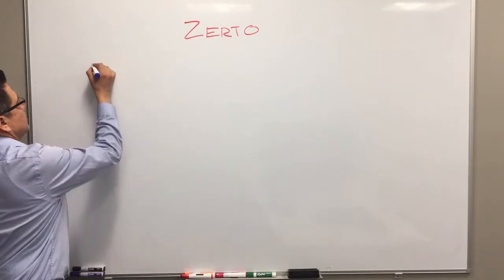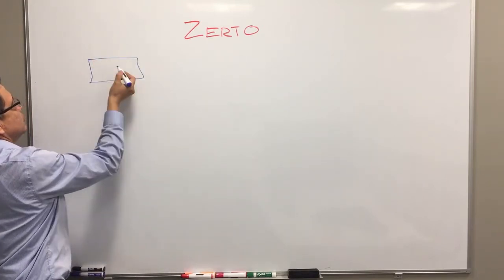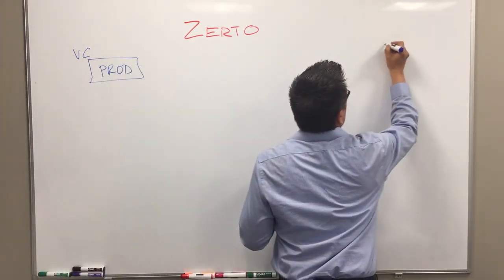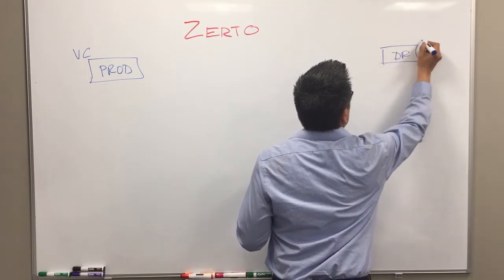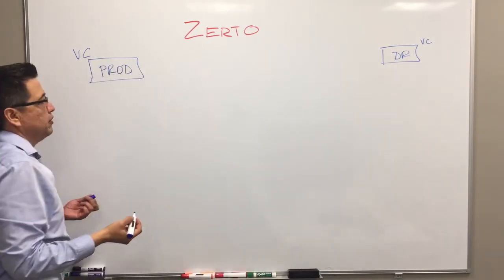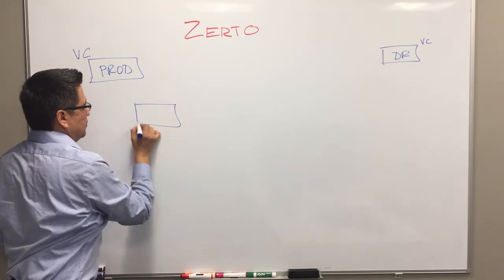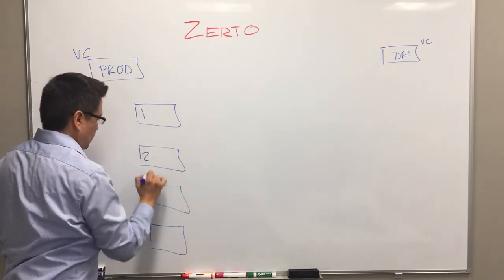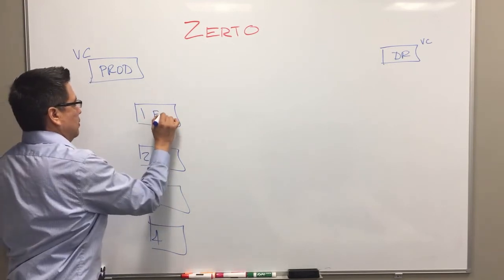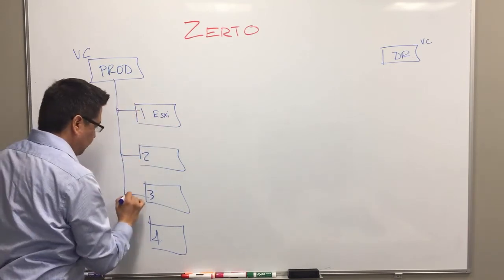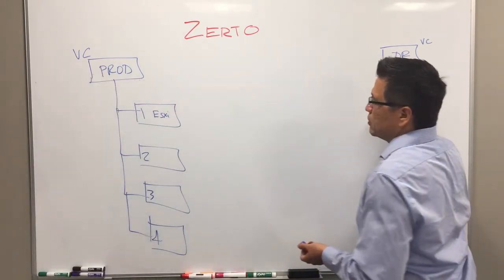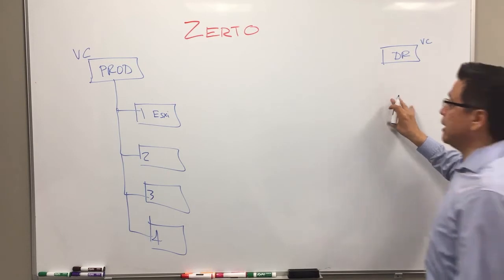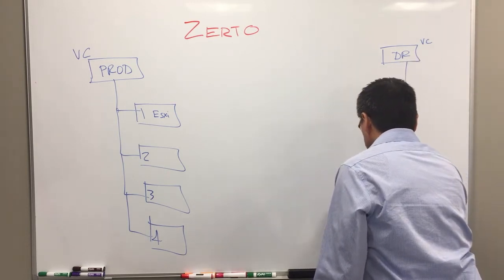Typically when we implement Zerto at a customer site, there's two sites and two vCenters. One of them is production and the other one is DR. In this particular installation we have four ESXi servers and we have four ESXi servers at the other side. But Zerto is very flexible, it's hypervisor agnostic, so we could have ESXi here, we could have Hyper-V here, we could have different hypervisors and still provide disaster recovery replication.